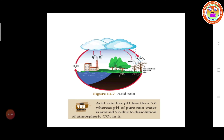Acid rain has a pH less than 5.6. The pH of pure water is around 5 to 6 due to the dissolution of atmospheric carbon dioxide in it. Normally, pure water has a pH of 7, but when carbon dioxide dissolves in rain water the pH drops to around 5.6.